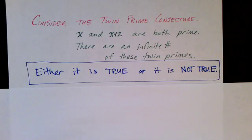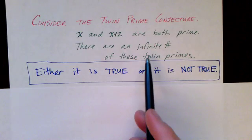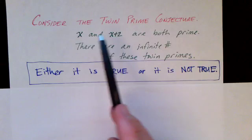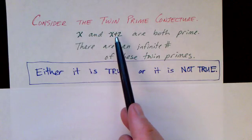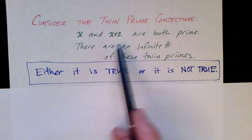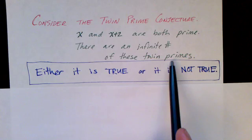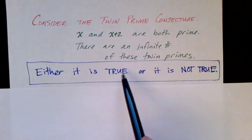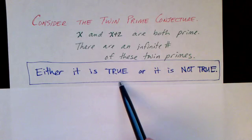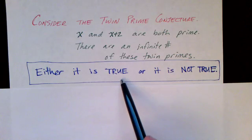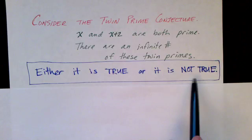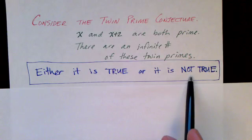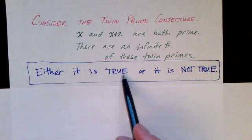Let's go back to the twin prime conjecture. Remember that a pair of twin primes is two numbers that are separated by two, and both are prime. And the conjecture is that there are an infinite number of these pairs. And this statement is either true or it's not true. We haven't proven that it's true, and we haven't proven that it's false. So we don't know whether this statement is true or false. But the statement itself is either true or false.